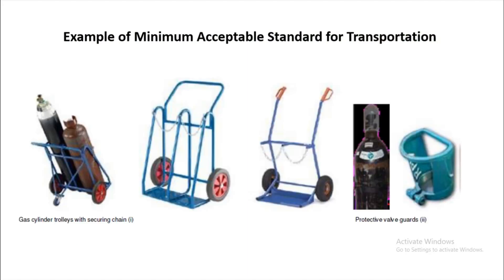As an example of minimum acceptable standards, here is a trolley with a chain for safely transporting cylinders. The cylinders shown — oxygen and fuel gas — are stored on the trolley during use. When not in use, they should be separated and placed in a proper storage area. Make sure your trolley is purpose-built for cylinders, not a makeshift trolley.